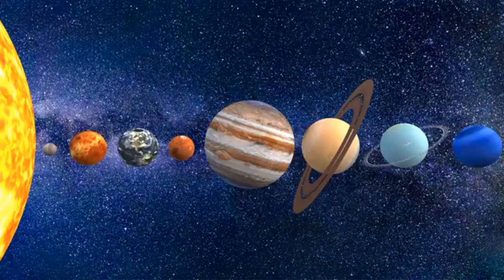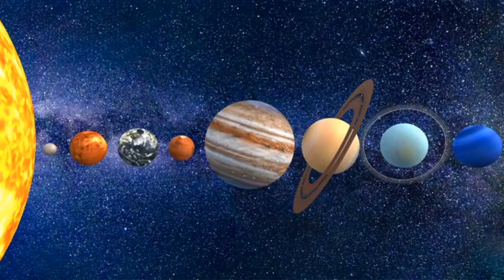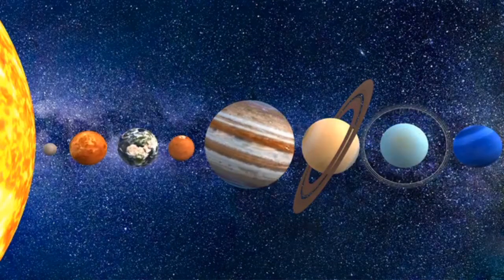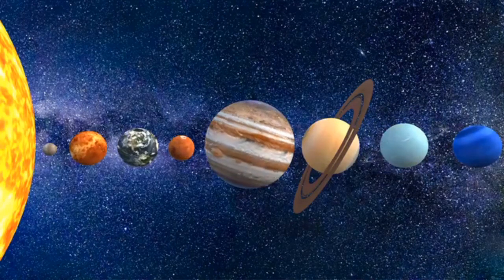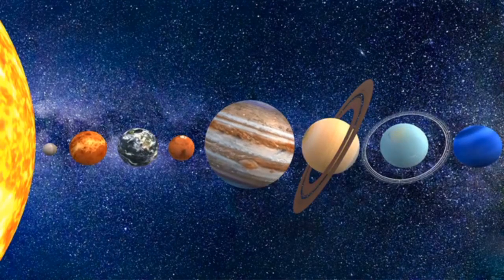Gravity is what holds the moon in orbit around Earth. Gravity causes Earth to orbit the sun. It keeps the sun in place in the Milky Way galaxy.